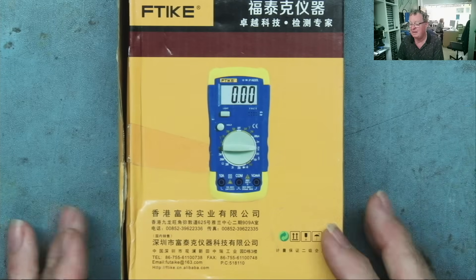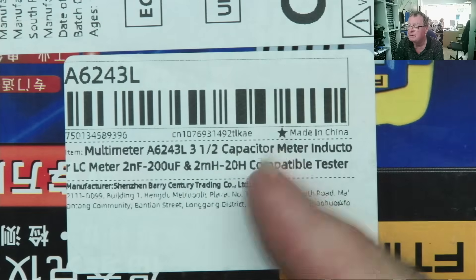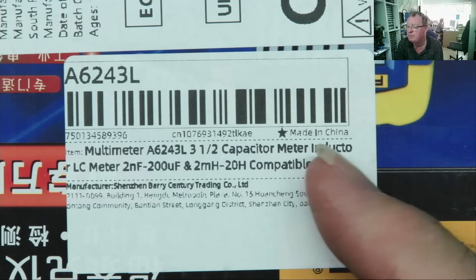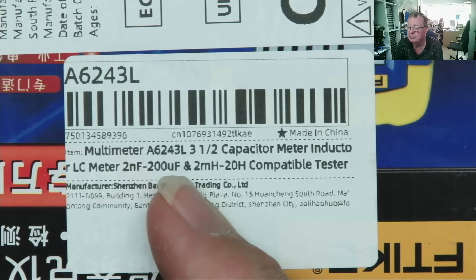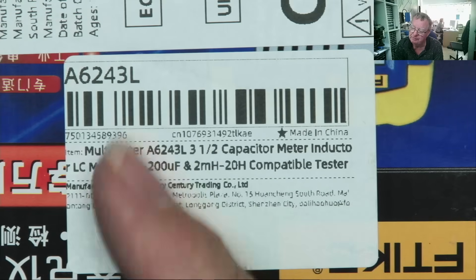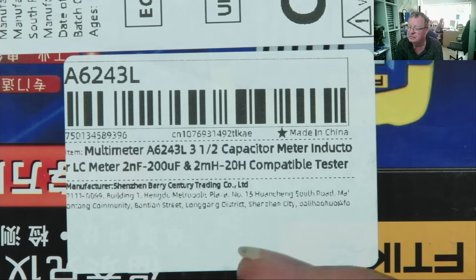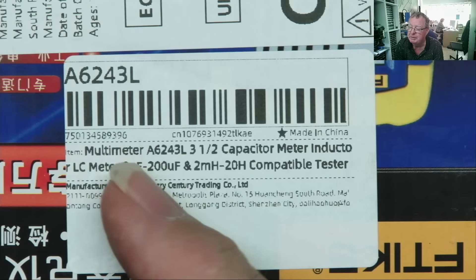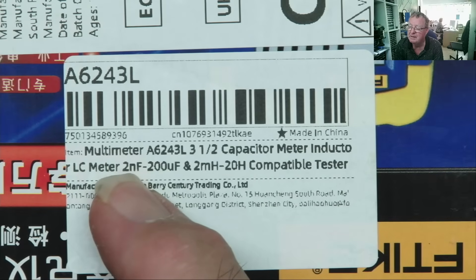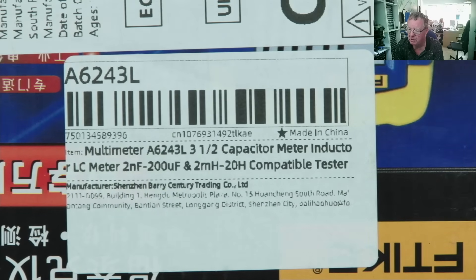What I have here is a three and a half digit capacitor meter inductor LC meter. Two nanofarads to 200 microfarads, so it won't read very small capacitors, and 2 millihenries to 20 henries. But this might actually be the range, so two nanofarads might be the lowest range, and obviously it reads lower than that.